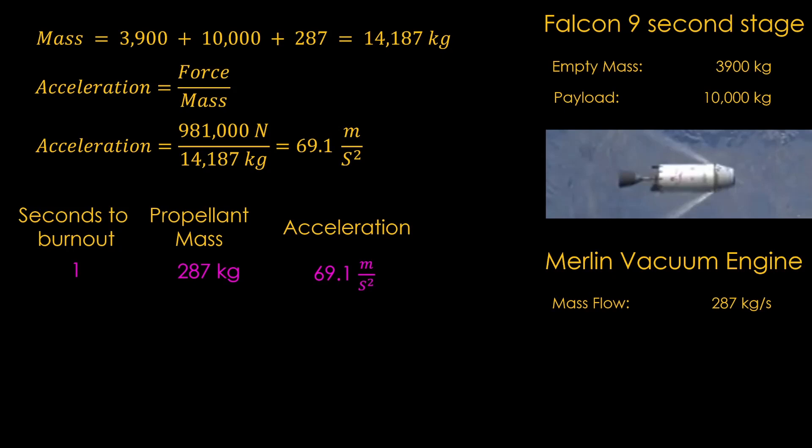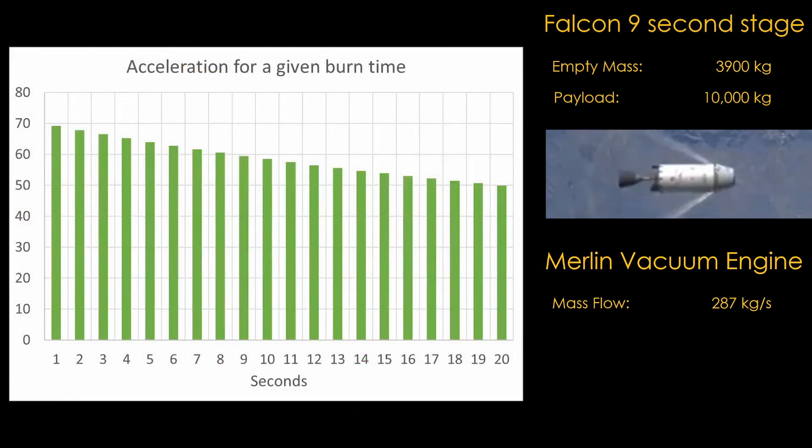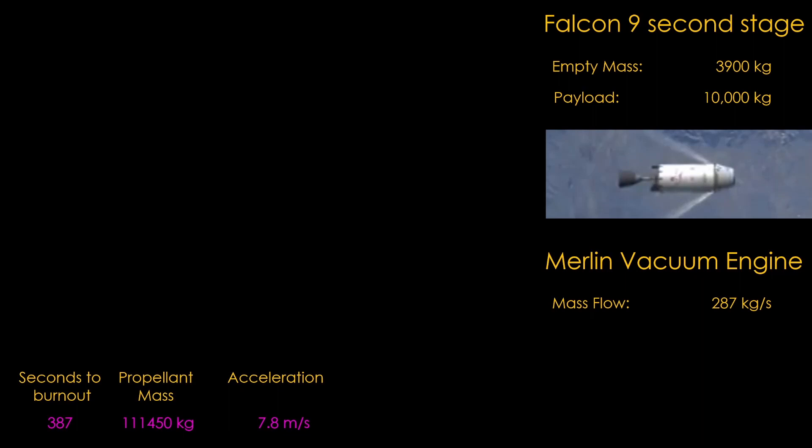Now we can look at the last five seconds of the burn. When there is five seconds of propellant left, our acceleration is 64 meters per second squared. This isn't at all surprising. We would naturally expect the rocket to accelerate more slowly as we add more propellant mass. Here's a chart if we put 20 seconds of fuel in this stage. With 20 seconds of fuel, we only get 50 meters per second of acceleration. Each additional second of propellant provides less benefit. There's enough propellant in the stage to burn for 387 seconds, and if it's full, it has over 111,000 kilograms of propellant, and the acceleration is only 7.8 meters per second squared.